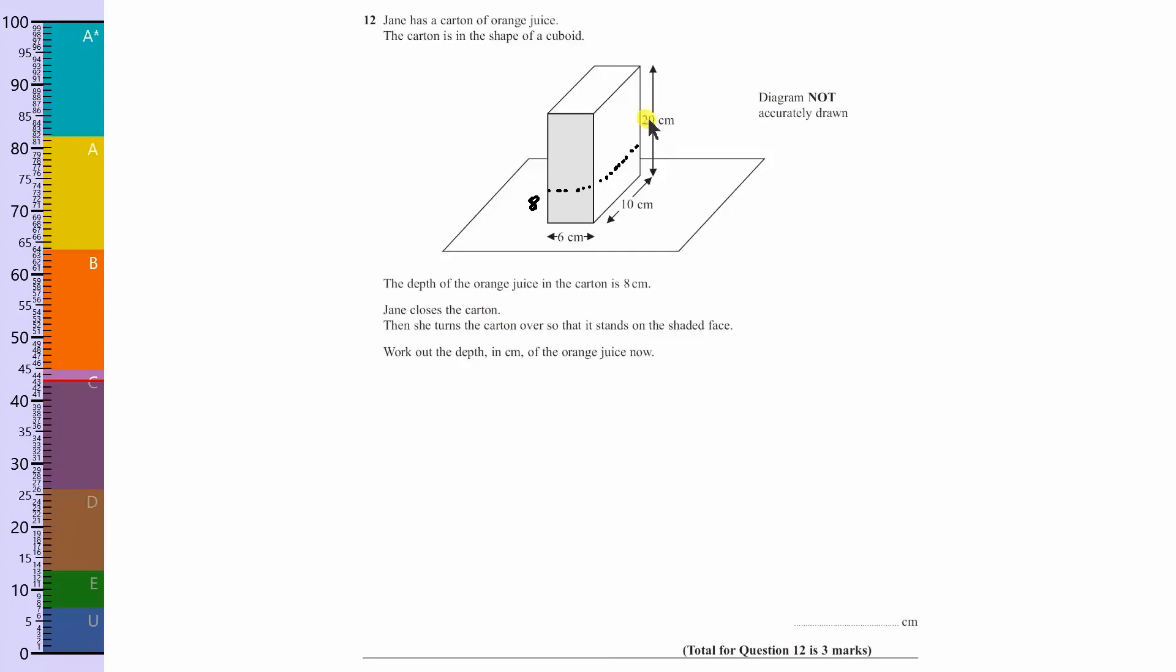The height before, or the height now, is 20 centimeters. When it's on its side, the height becomes 10 centimeters. So if I write that down, 20 divided by the new height, which is 10, gives the answer of 2, so it's basically halved in height.